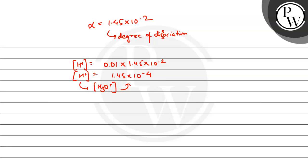So 1.45 into 10 to the power minus 4 is going to be the answer here, and alpha is going to be 1.45 into 10 to the power minus 2. I hope you all know, thank you very much, all the best.